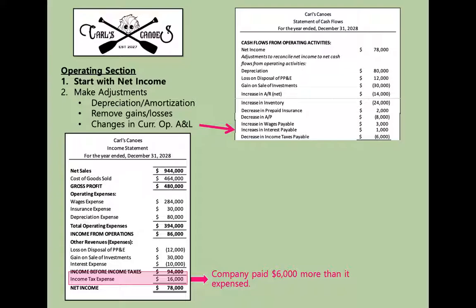Now that we've gone through all the current operating assets and liabilities and appropriately added or subtracted the changes in those accounts, we've completed the operating section. Starting with $78,000 net income and applying all adjustments, net cash flow from operating activities is $94,000. That means over the course of 2028, cash increased by $94,000 due to operational activities.